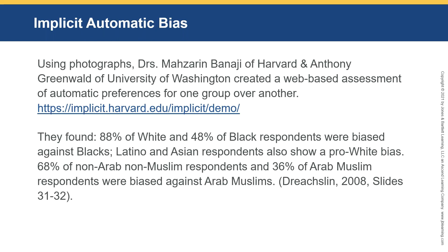What does this mean? It means we need to think about our own bias. Researchers from Harvard and the University of Washington created a web-based assessment of automatic preferences for one group over another — project implicit. They found 88% of white and 48% of Black respondents were biased against Black people. Latino and Asian respondents also showed a pro-white bias. 68% of non-Arab, non-Muslim respondents and 36% of Arab Muslim respondents were biased against Arab Muslims.